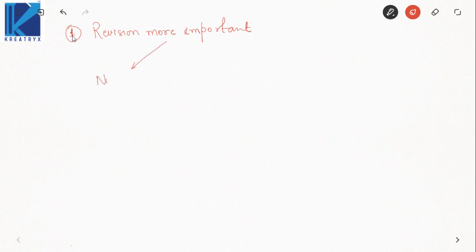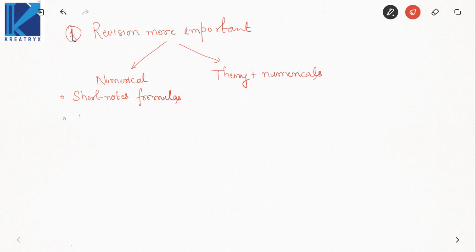In one type of subject the sole focus is on numericals and there is less theory. In other types there is both theory and numericals. The GATE exam is more focused on numericals, but you can't escape the fact that certain theoretical concepts need to be studied. If the subject is purely numerical, you need to revise through short notes for any formulas, then practice certain problems — this is optional — and then attempt one or two subject tests.